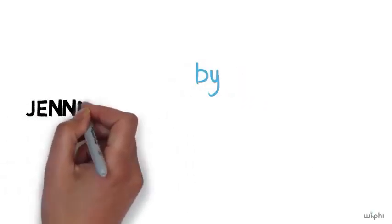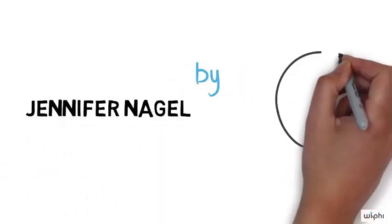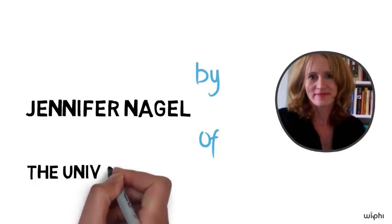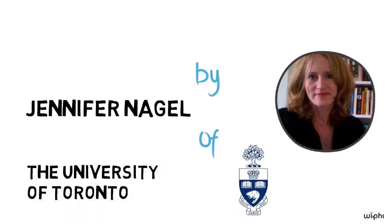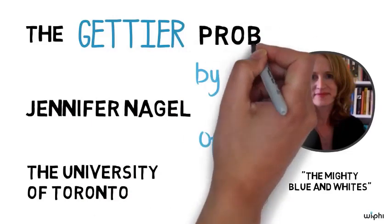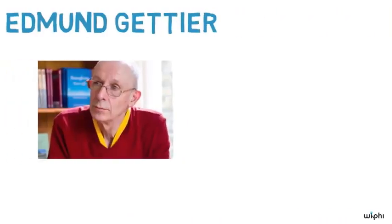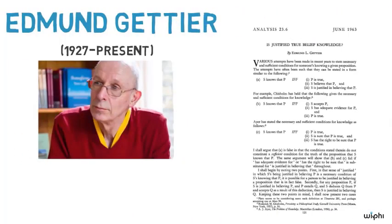My name is Jennifer Nagel. I teach philosophy at the University of Toronto, and today I want to talk to you about the Gettier problem. This problem gets its name from the philosopher Edmund Gettier, who published a very short and famous paper on it in 1963.